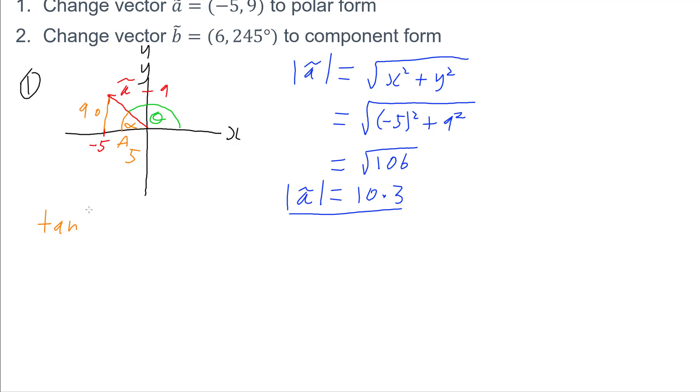So tan of our angle is the opposite over adjacent. And so tan of alpha is opposite 9 over adjacent 5. And it's always going to be y over x. That gives us the inverse tan of 9 over 5, which gives us an angle of 60.95 degrees.